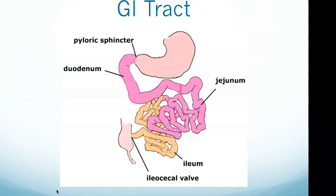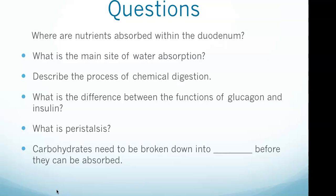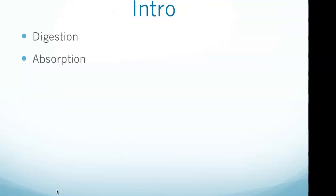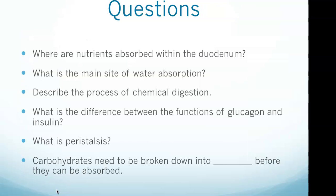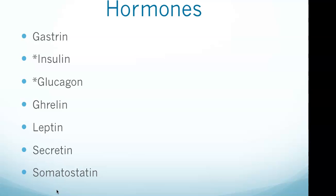That relates to one of our questions: what is the difference between the functions of glucagon and insulin? Ghrelin: its function is to increase hunger, and the stimulus for release is an empty stomach. Leptin: the stimulus for release is fat in the bloodstream, and its function is to reduce hunger by signaling satiety. Secretin: the stimulus for release is chyme in the duodenum, and it stimulates the pancreas to release bicarbonate. Somatostatin: the stimulus for release is acid in the stomach, and its function is to inhibit gastric secretion and slow digestion.